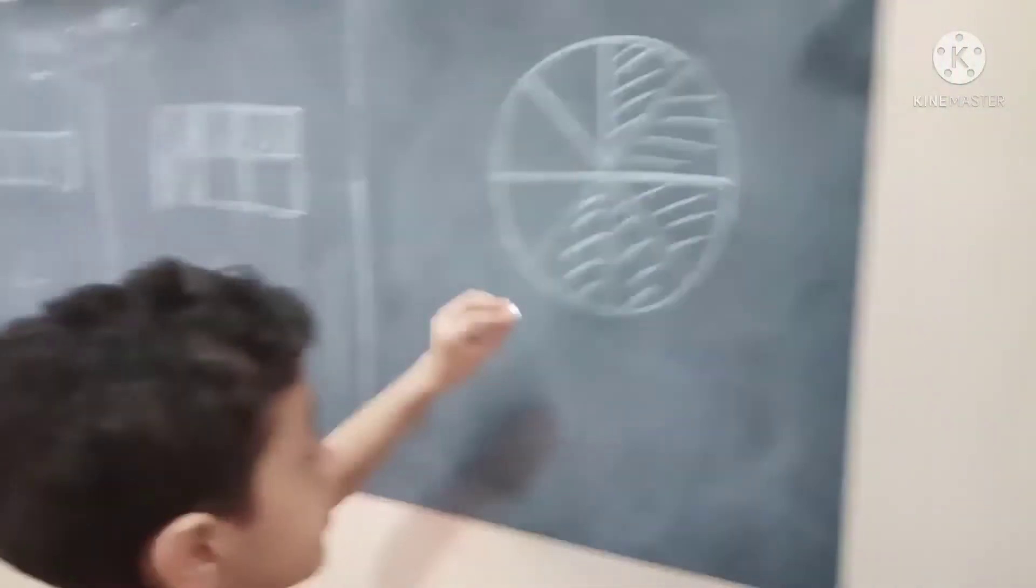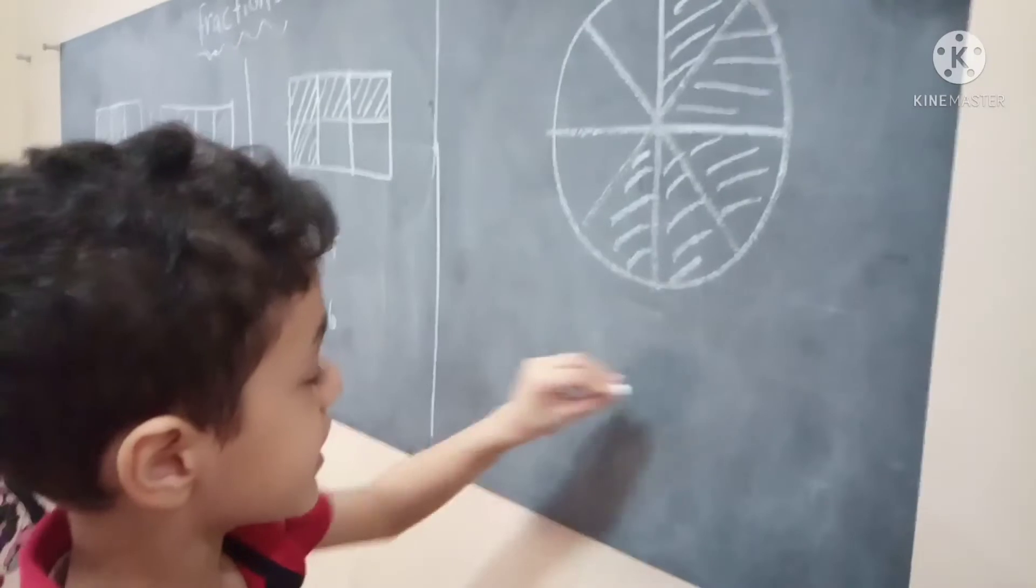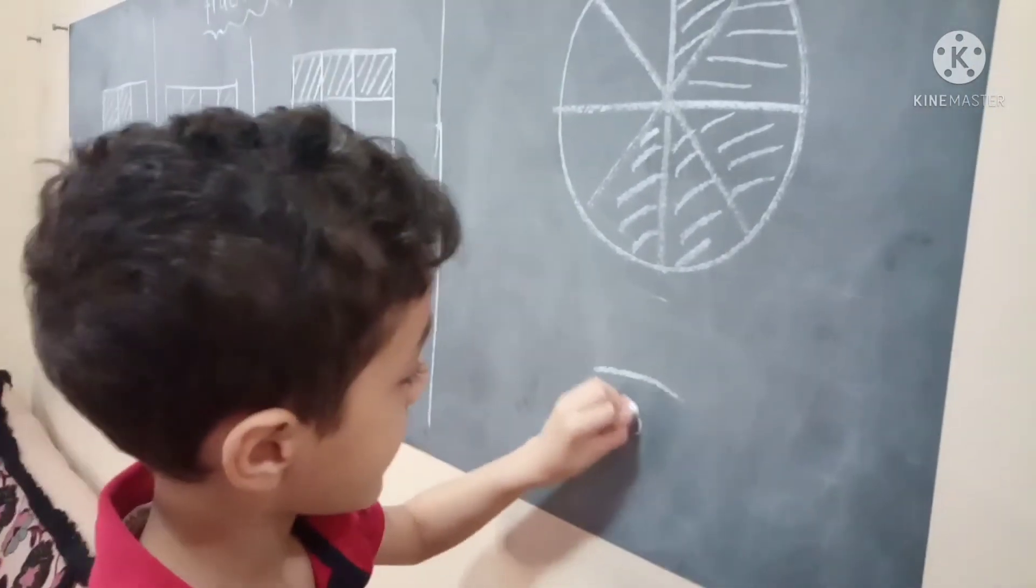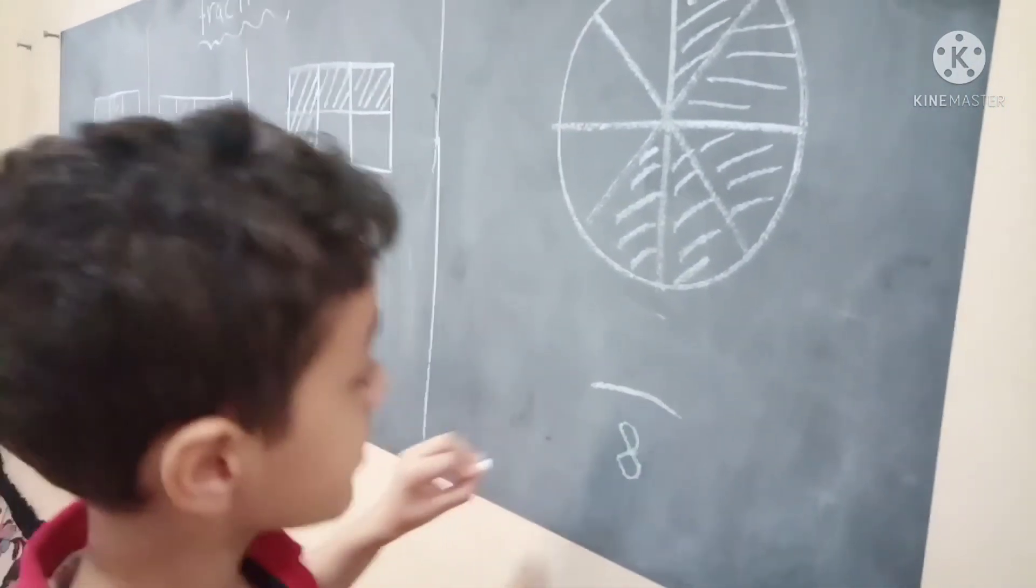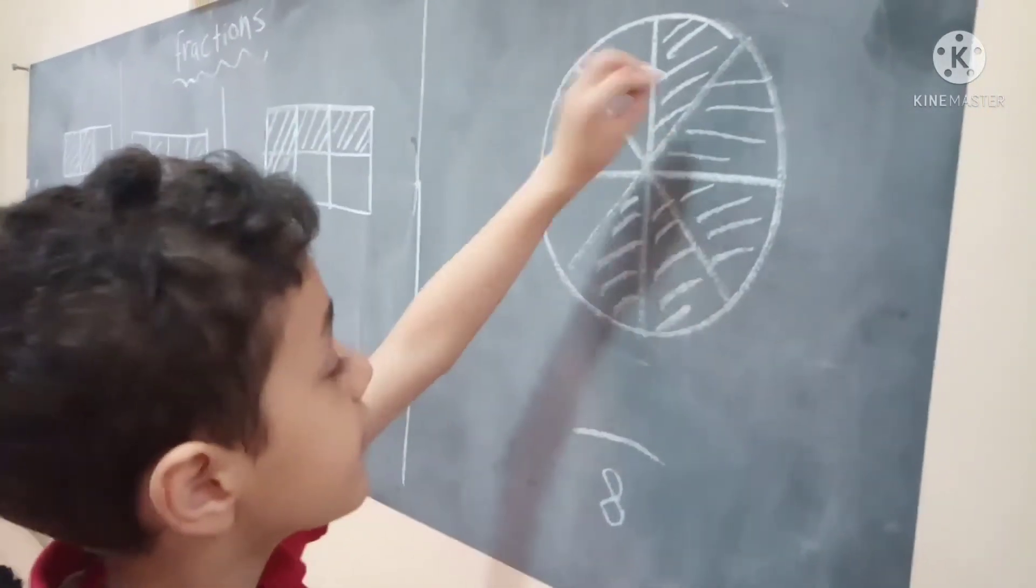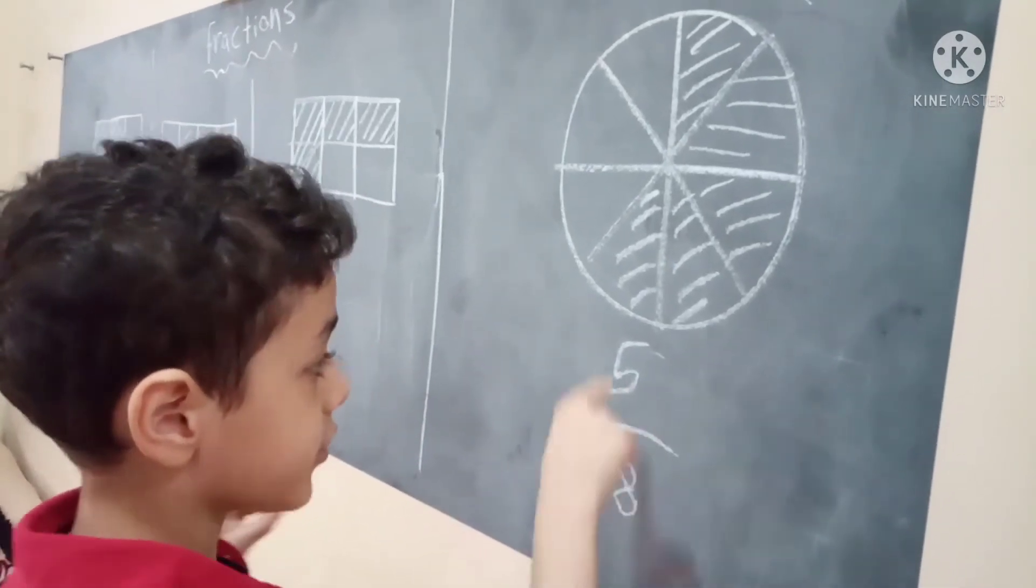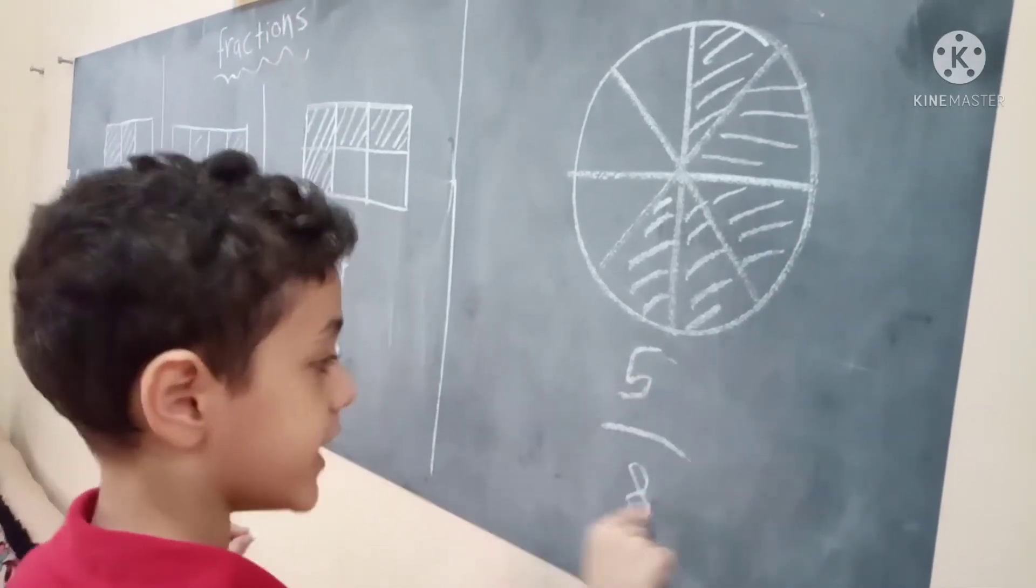And this one is one, two, three, four, five, six, seven, eight. This is eight. And eight is denominator. And the colors are one, two, three, four, five. And five is denominator. So this is five over eight.